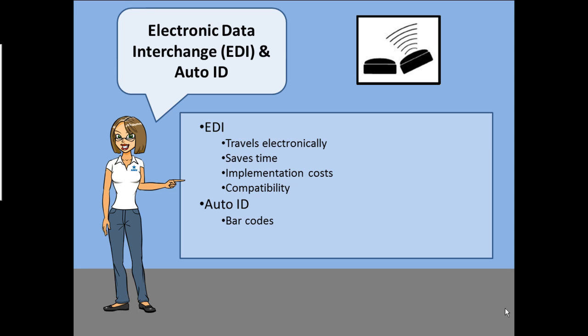Barcoding minimizes human error, simultaneously increasing efficiencies with inventory and spacing. That's why it is important to barcode all products. This brings us to RFID or radio frequency identification.